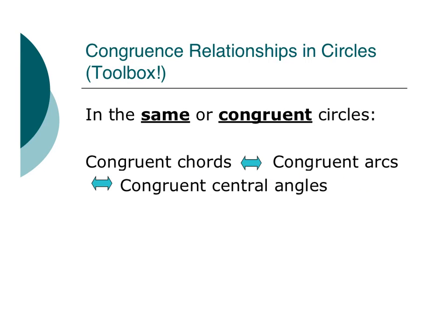Now these congruence relationships in circles are super-duper-duper-duper important. Basically, if we have congruent chords, we've got congruent arcs and congruent central angles. If we've got congruent arcs, the chords and central angles are congruent as well. And if we have congruent central angles, we know that the chords are congruent, and we know that the arcs are congruent. So if you have one, you have them all.